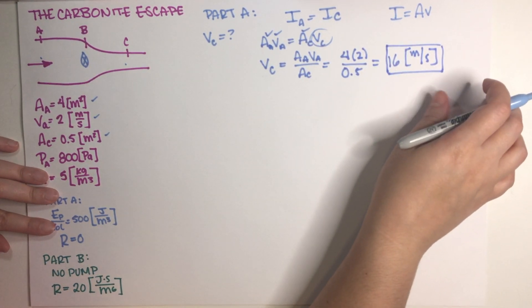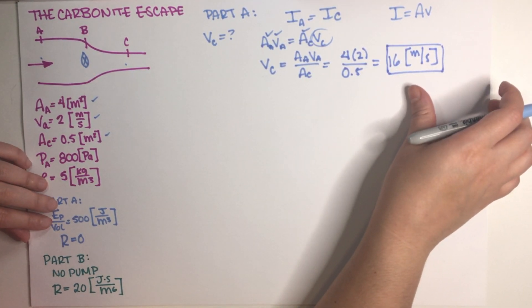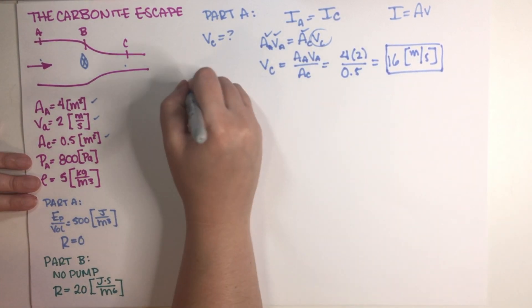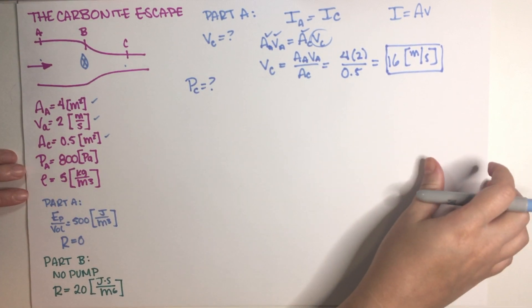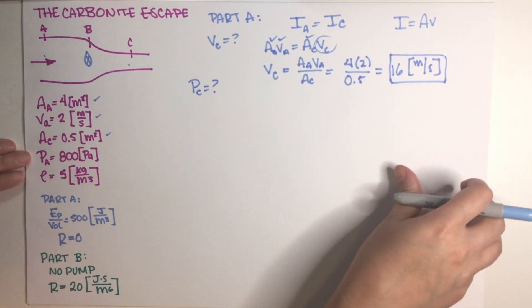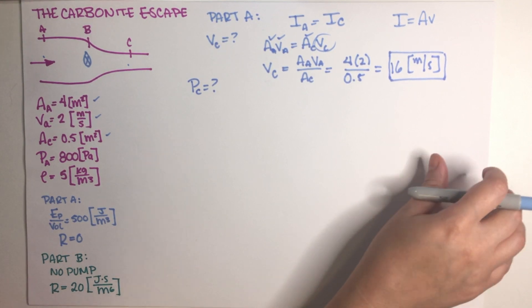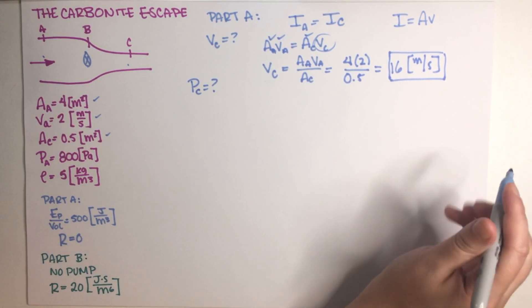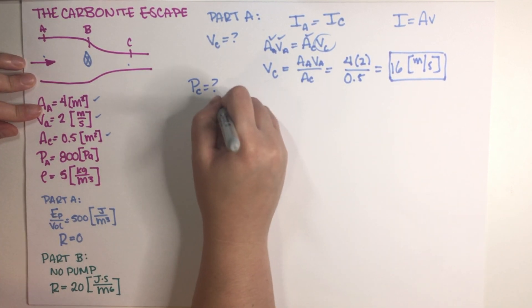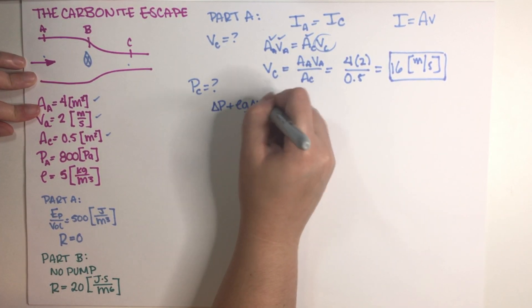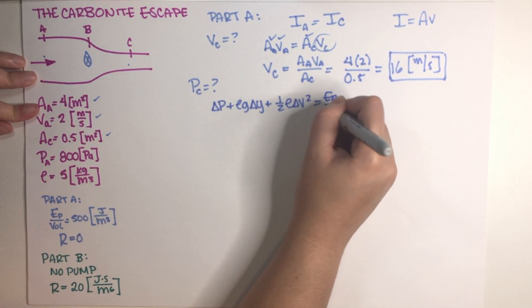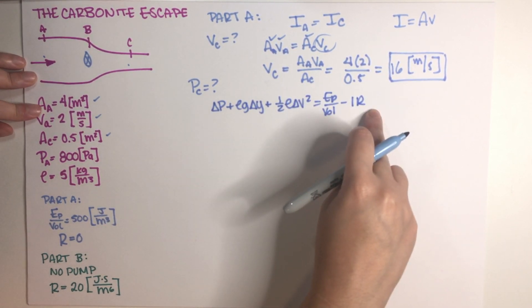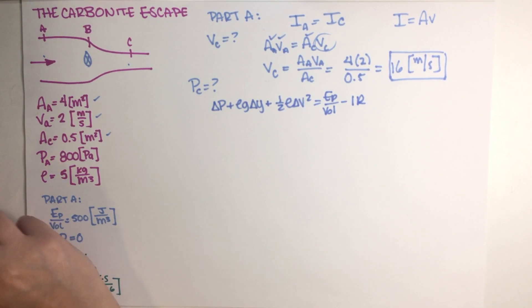Now Part A is also asking us what would the pressure at point C be in this situation? So what is pressure at C with the pump over here? Obviously, if we want a pressure, we have to jump into the Bernoulli equation. There really is no shortcut, so let's just go ahead and do that. I'm going to start with the entire equation.